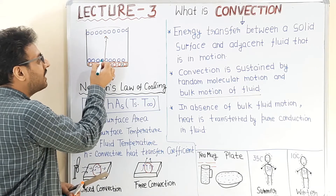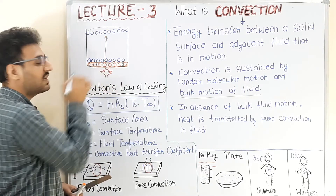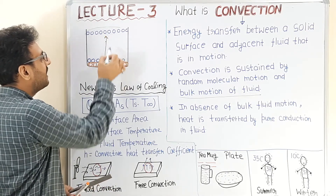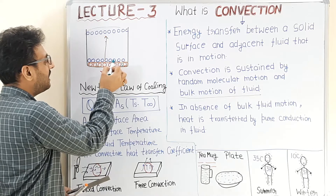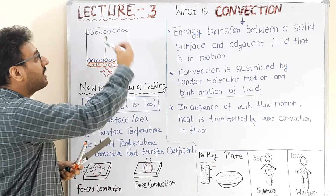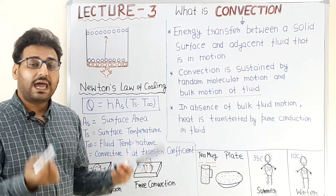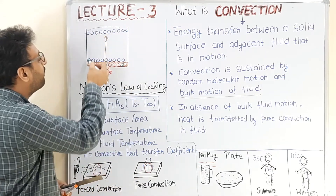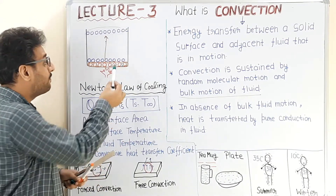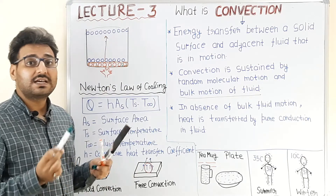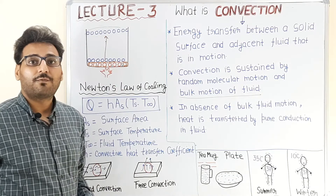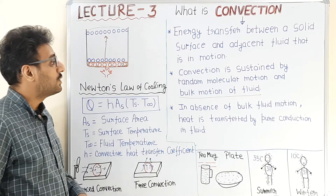The second layer, which is not in contact with the heating surface, is having low temperature. When the first layer moves, this second layer will take its place and will be heated. In this way, bulk motion of the fluid helps in heating the complete fluid medium. Without this bulk motion, a continuous rate of heat transfer from the solid surface to the fluid is not possible.